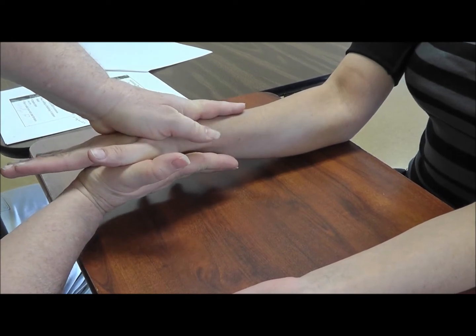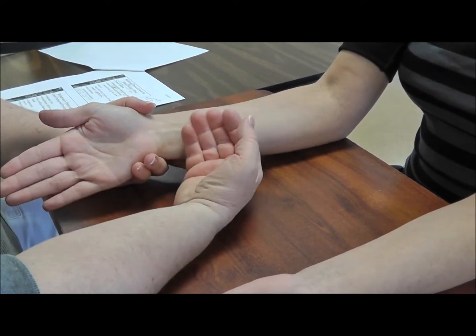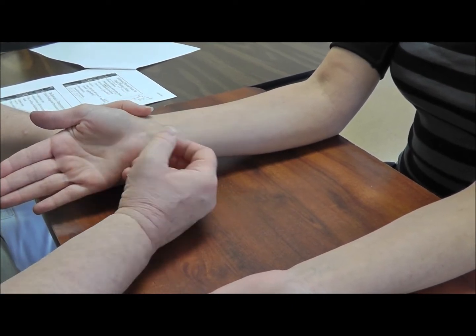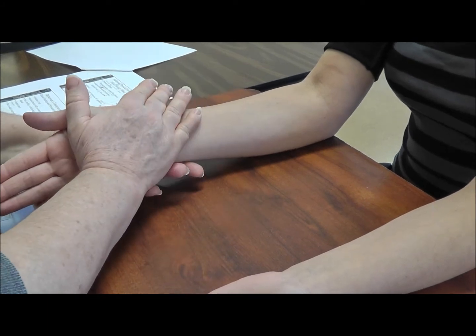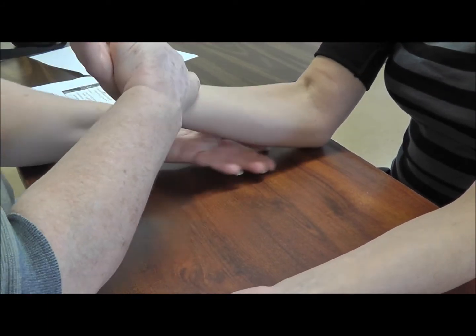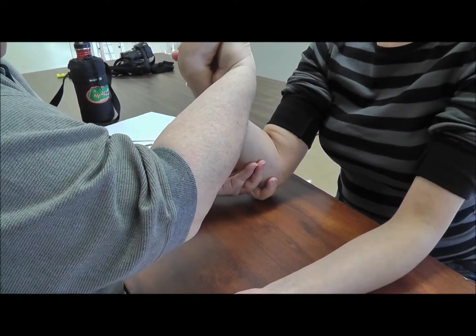Okay, so we would be looking for any complaints of pain or achiness through really any place that would be logical for median nerve distribution. Then we can do resisted elbow flexion. So I'm going to hold you back, but I want you to pull your arm in. Okay, I'm going to give her a little padding here on the elbow.